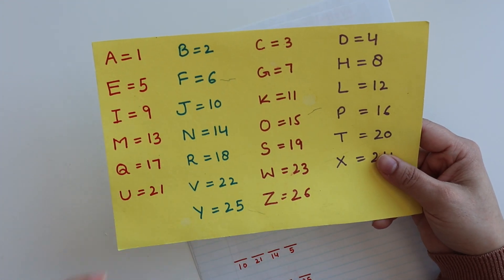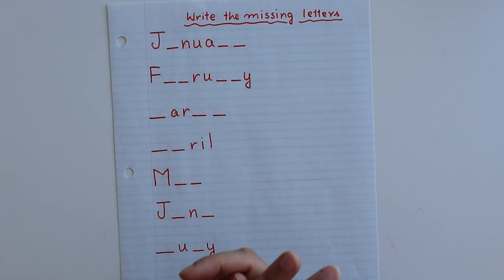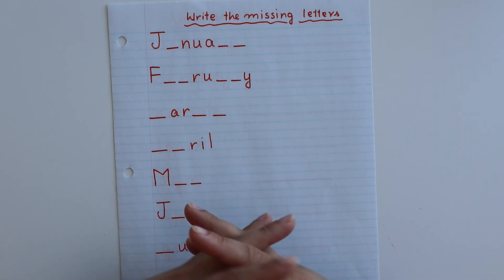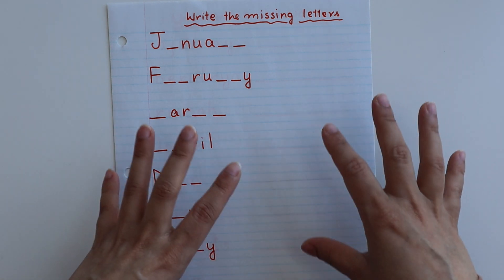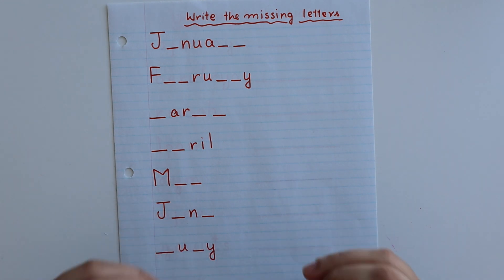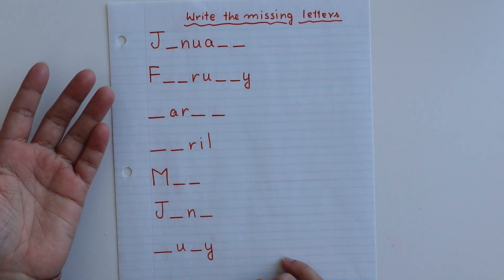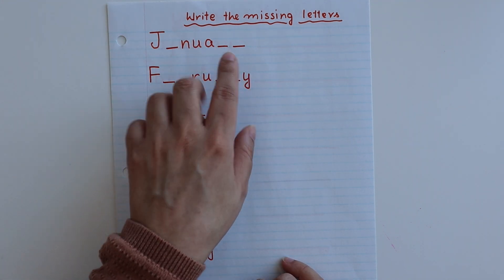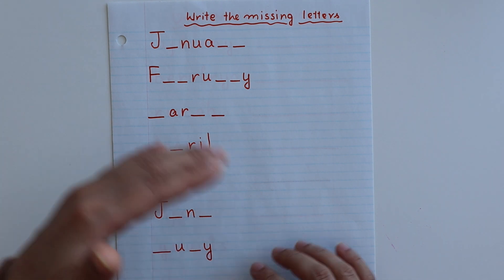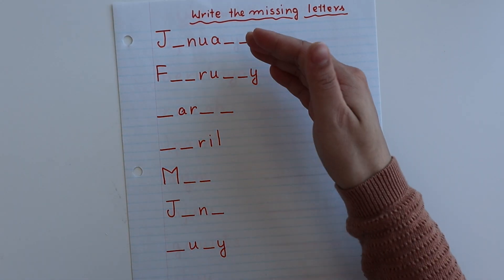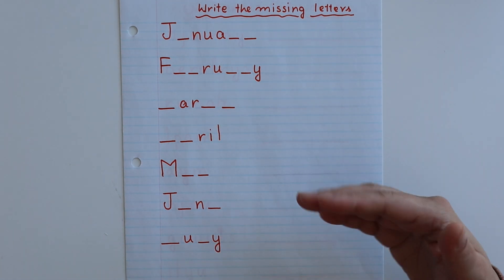This is also a very good activity you can use for any topic. Now, as spellings are coming along, sometimes children forget some letters, so try different activities to help them remember. The missing letter activity is a basic one — you can see here in January some letters are missing and the child fills in the correct letters. You can give 1 or 2 words at a time; it is totally up to you.